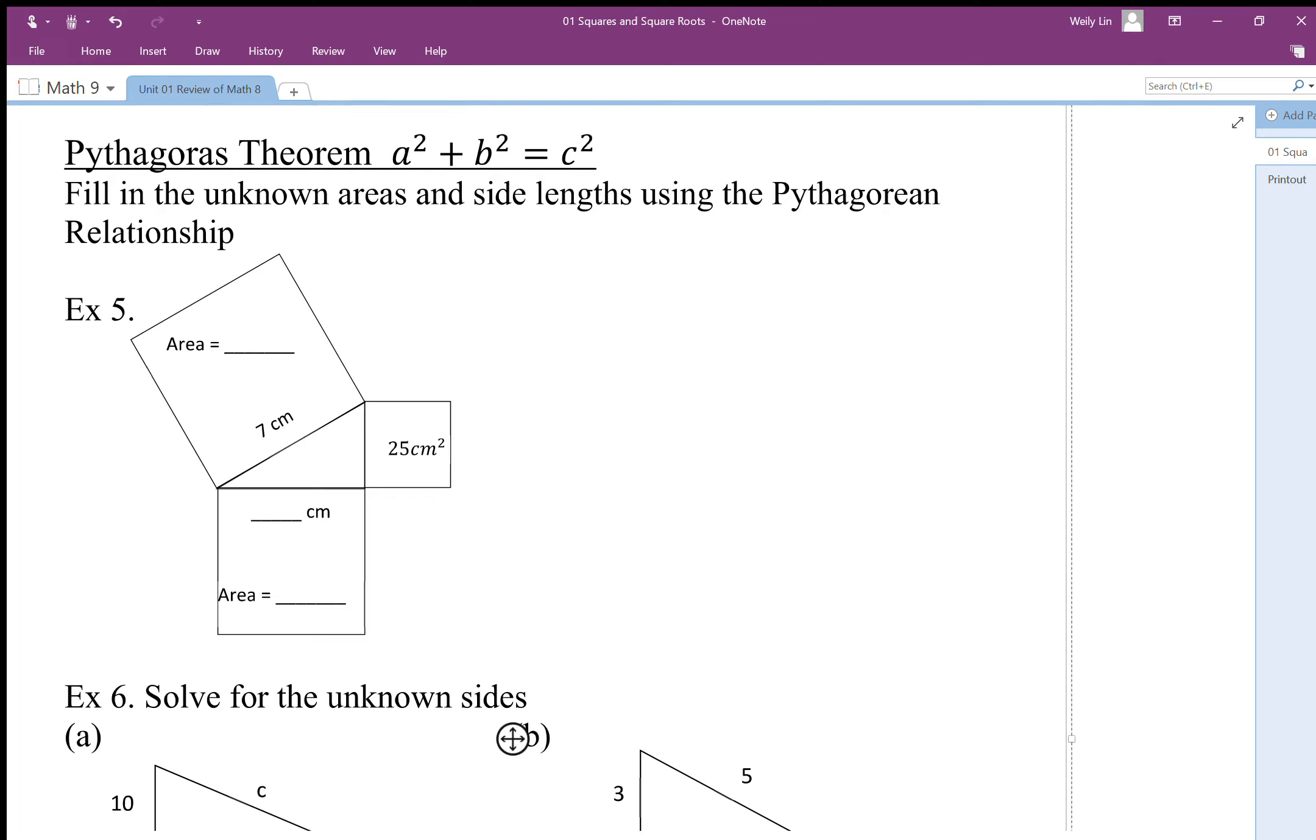The Pythagorean Theorem is a relationship of the three square areas from the side length of a right triangle. And again, this only works if your triangle is a right triangle. So I'm just going to highlight the right triangle in here. There's our right triangle.